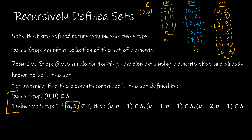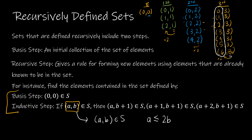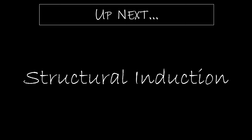So the pattern holds: whatever the second value b is, the first value a is going to be 2b or less — that is, a ≤ 2b. Here, 2·3 = 6, and indeed the first values go up to 6. The same pattern holds for each iteration. We'll talk about this again in our next video on structural induction, which is another type of mathematical induction using recursive definitions.